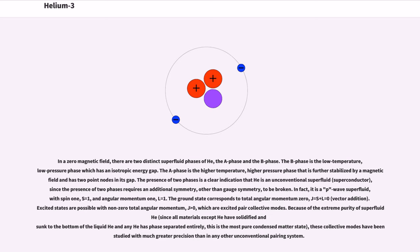The ground state corresponds to total angular momentum 0, J equals S plus L equals 0, vector addition. Excited states are possible with non-zero total angular momentum, J greater than 0, which are excited pair collective modes. Because of the extreme purity of superfluid He3, since all materials except He3 have solidified and sunk to the bottom of the liquid He3 and any He4 has phase-separated entirely, this is the most pure condensed matter state. These collective modes have been studied with much greater precision than in any other unconventional pairing system.